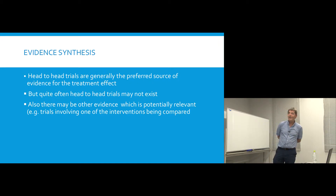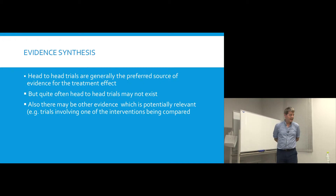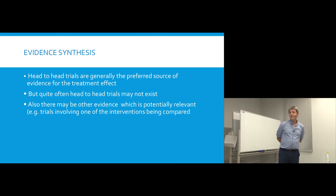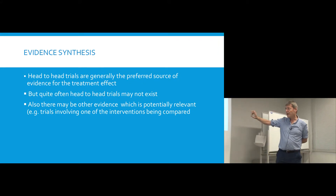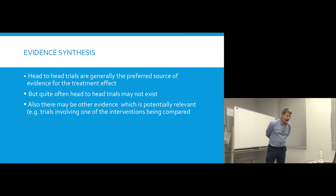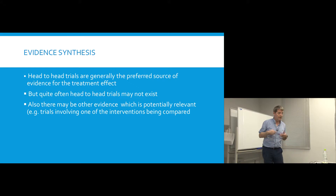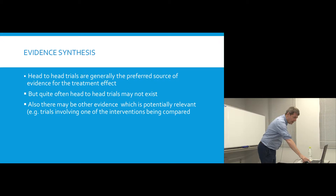This general area is called evidence synthesis. You would prefer head-to-head data in order to get an estimate of your treatment effect, but you haven't got it. But there may be evidence out there that's still useful. There may be a series of trials involving at least one treatment. You'll have trial data that maybe involves your intervention but not your comparator, or some other trial that involves the comparator but not your intervention. The question arises: can we still use that information in order to help get an estimate of the treatment effect?